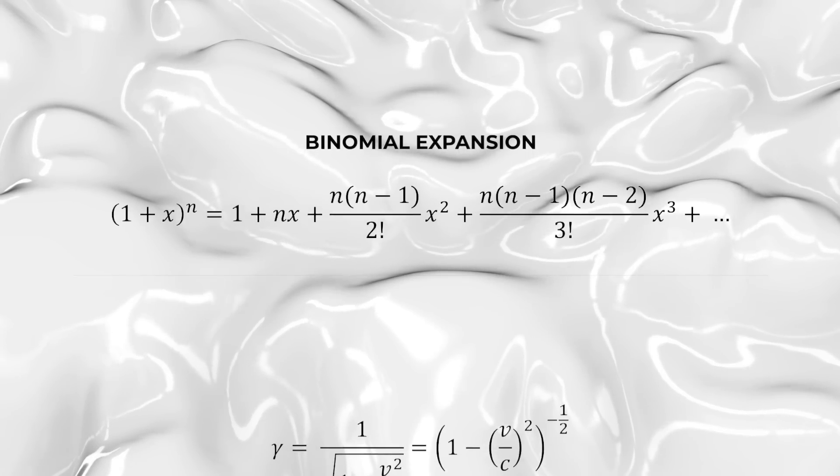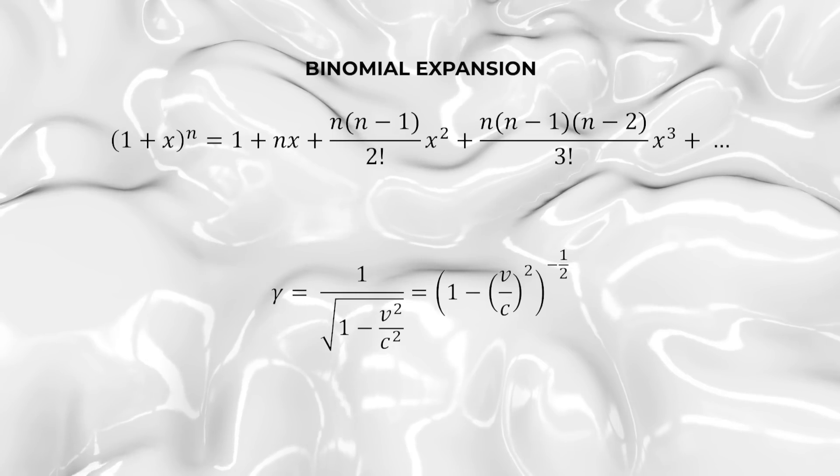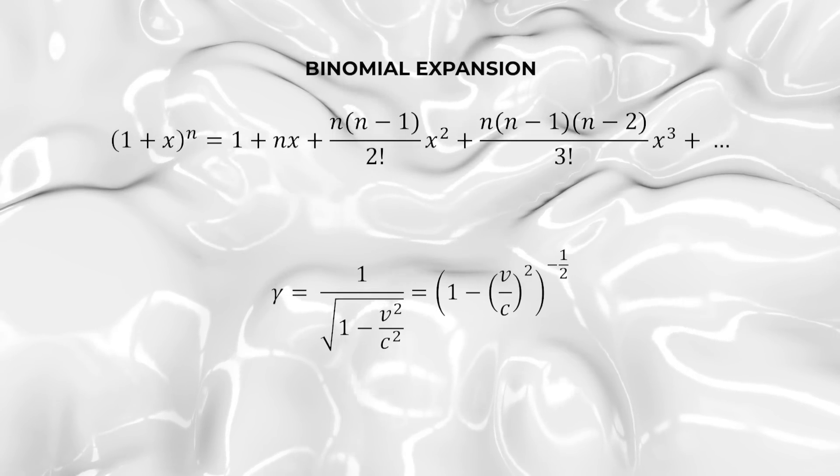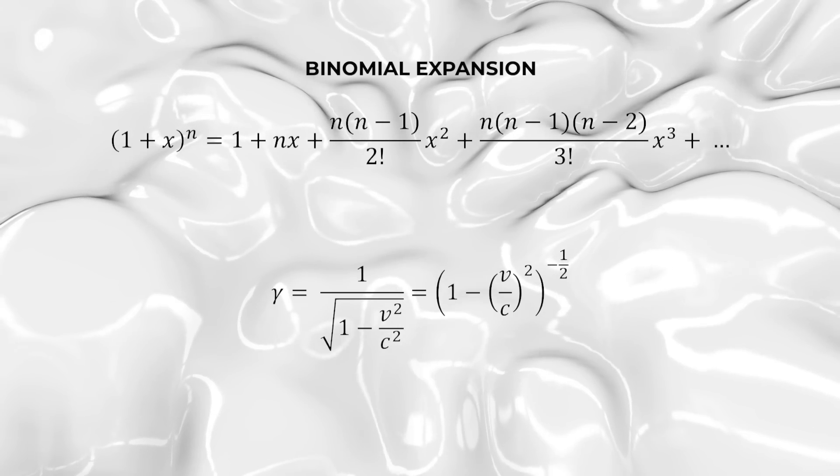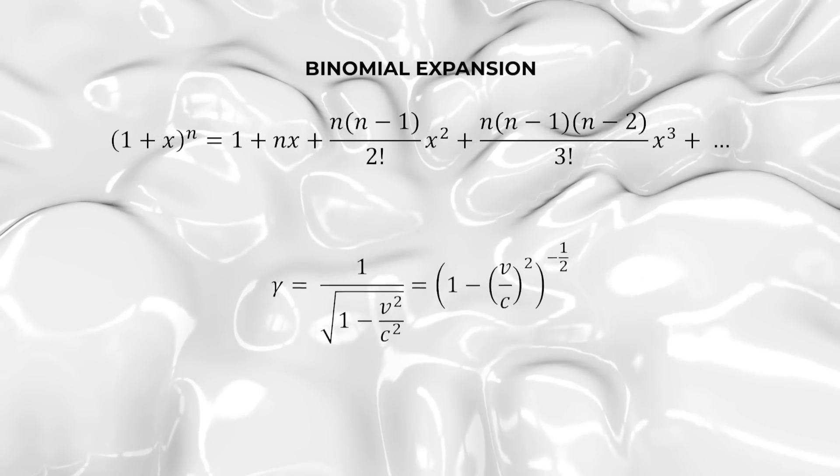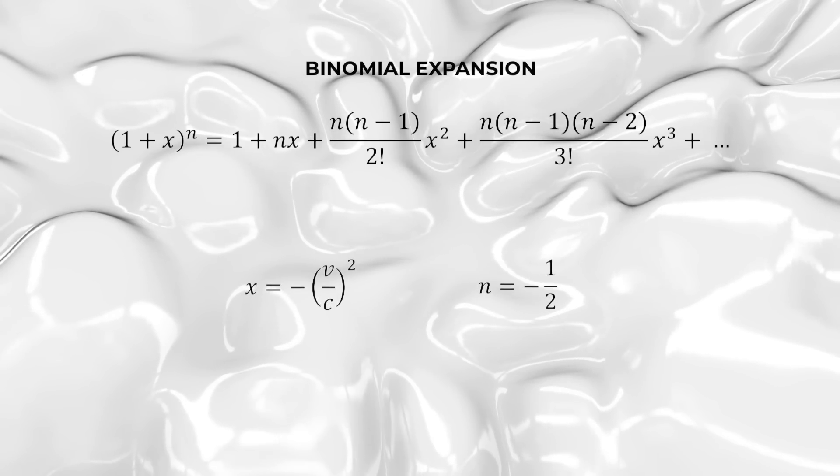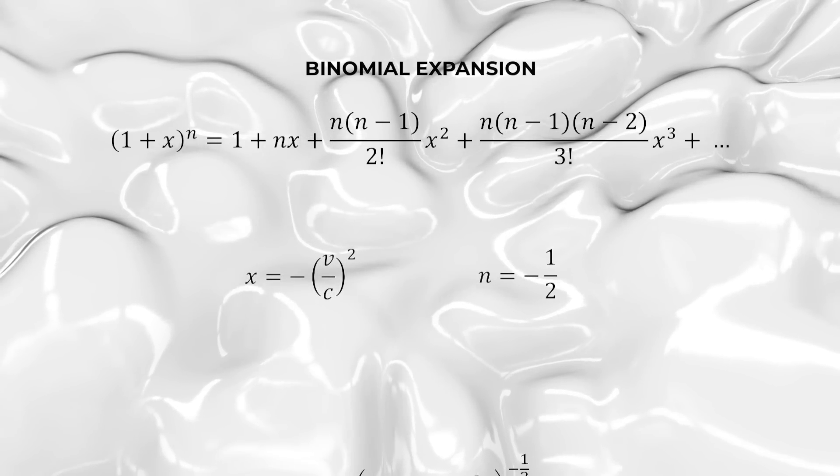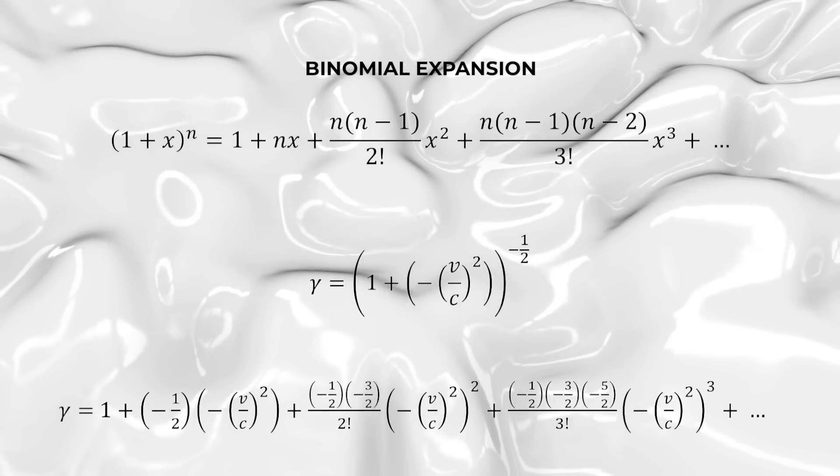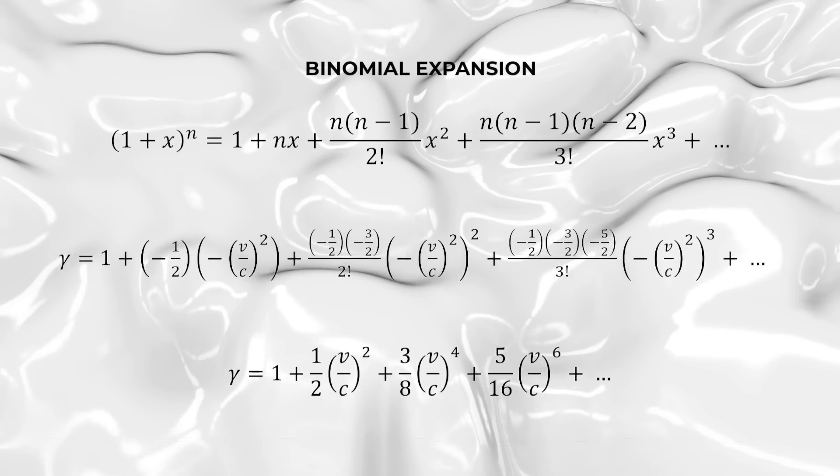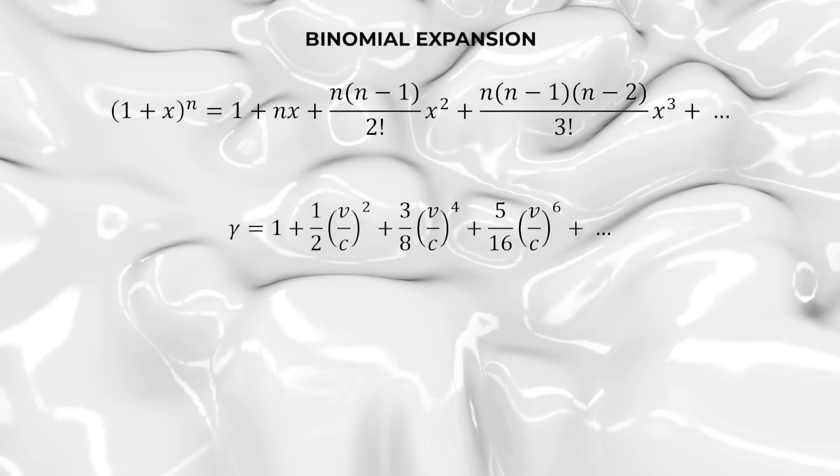So we can look at that gamma factor of Einstein and see how this binomial expansion can help us. One over the square root of one minus v squared over c squared can be written as one minus v squared divided by c squared to the minus one half power. So, since v divided by c is less than 1, that means that v squared divided by c squared is definitely less than 1. And this means that we can use the binomial expansion. We plop in minus one half for n and minus v squared over c squared for x and we do some simplification and we end up with the final answer. This is for gamma.